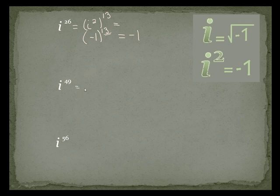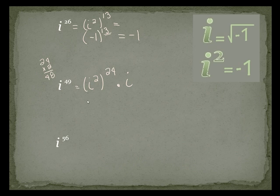How about i to the 49? That's i squared to the twenty-fourth power — because 24 times 2 is 48, and I still need one more for my 49. So this is negative 1 to the 24th times i. Negative 1 raised to an even power is positive 1, so I have 1 times i, which is i.